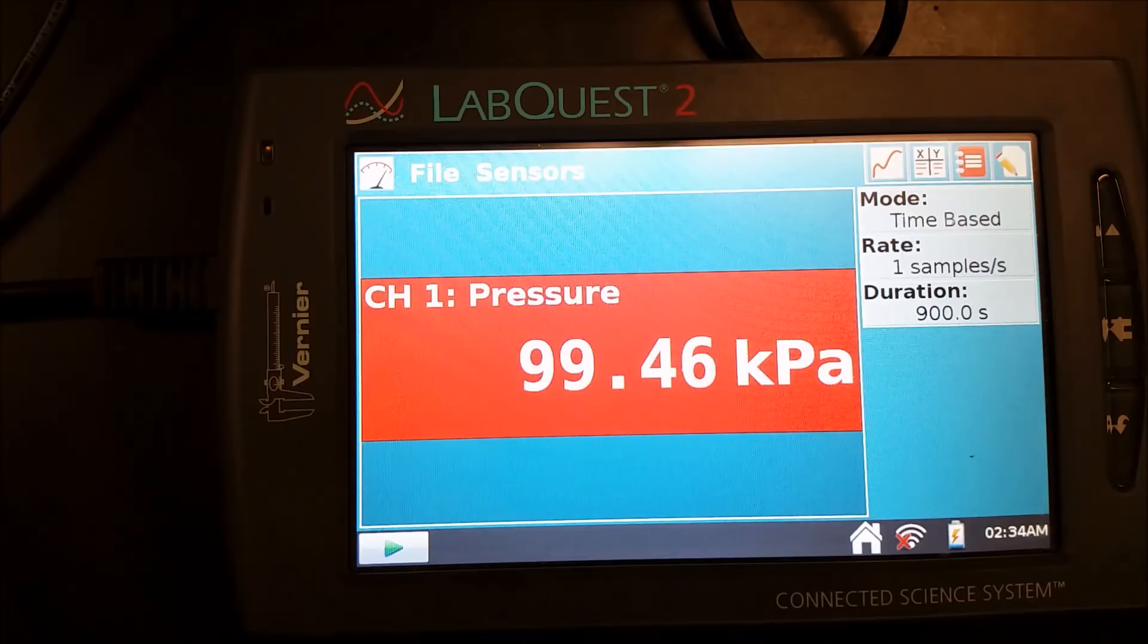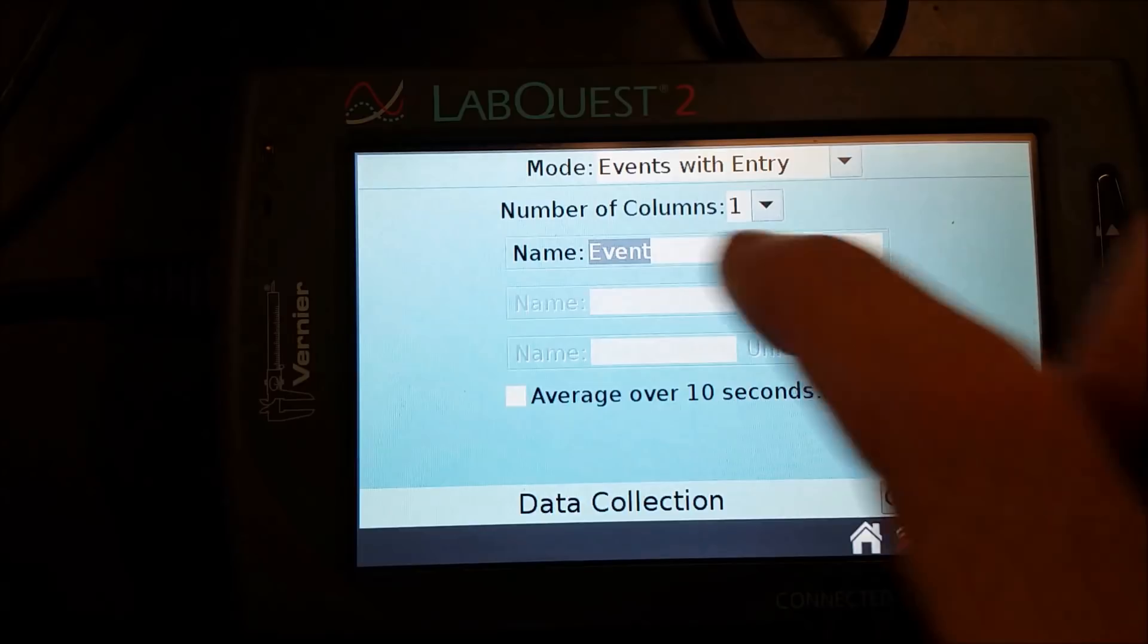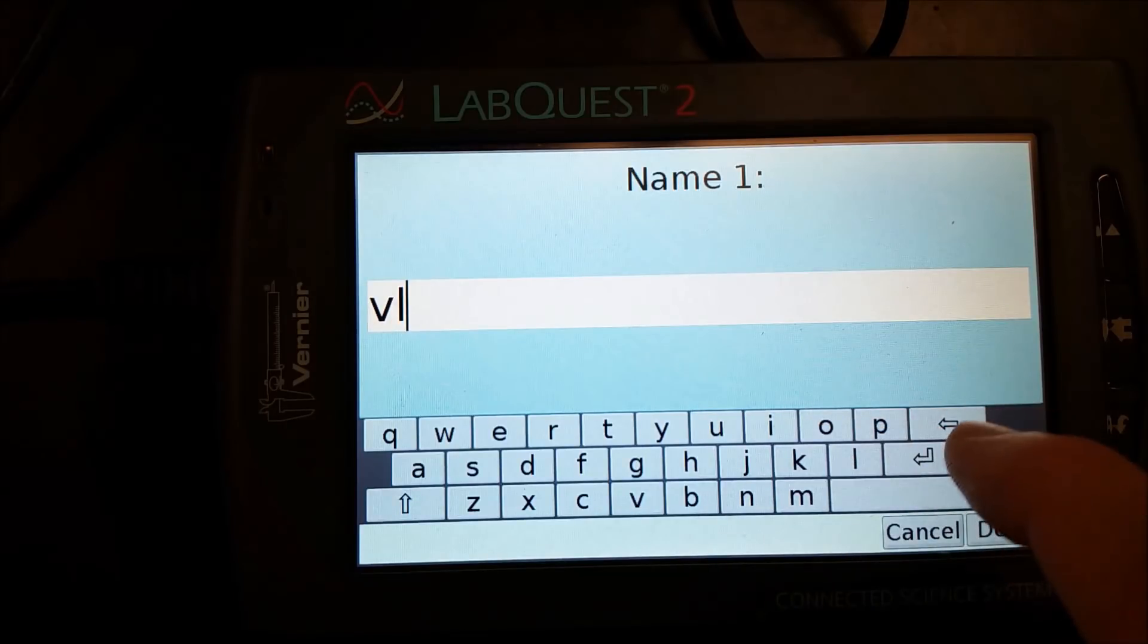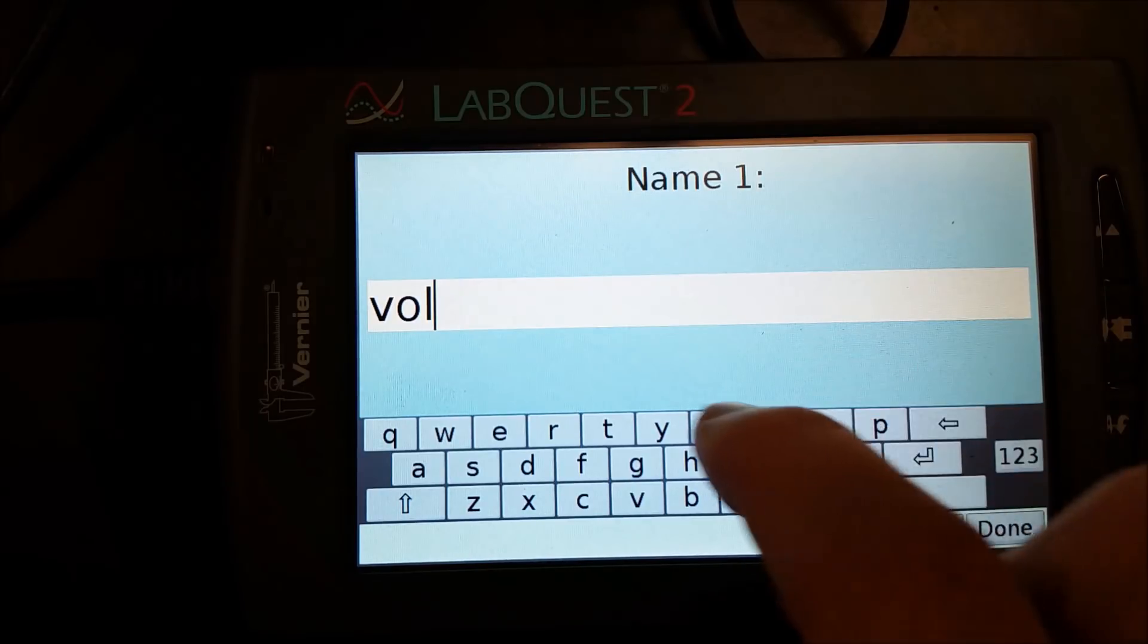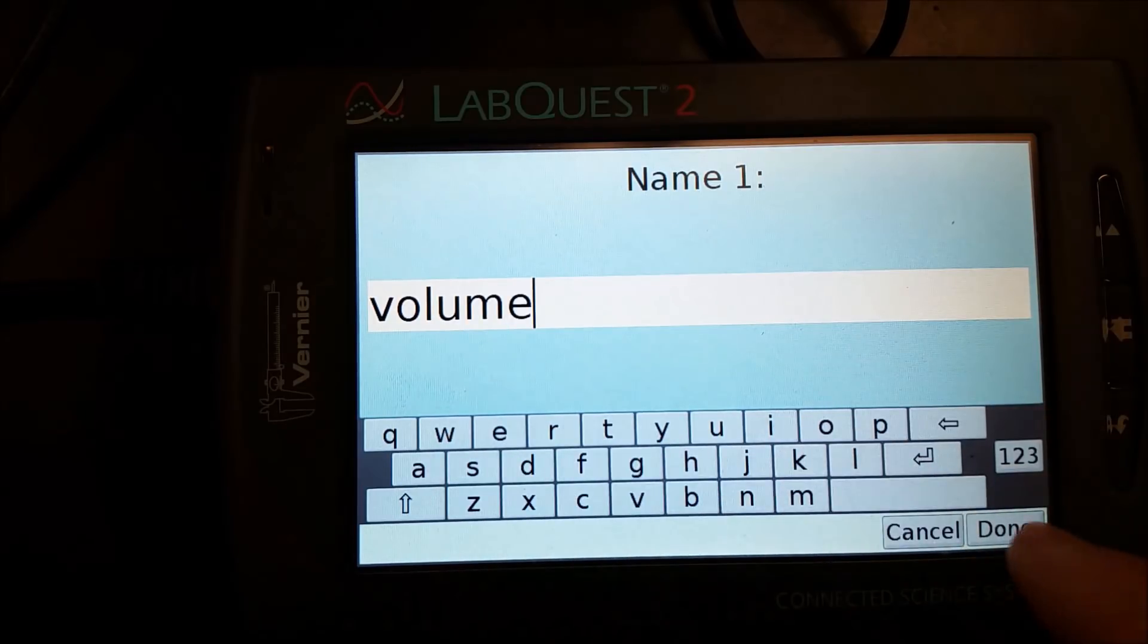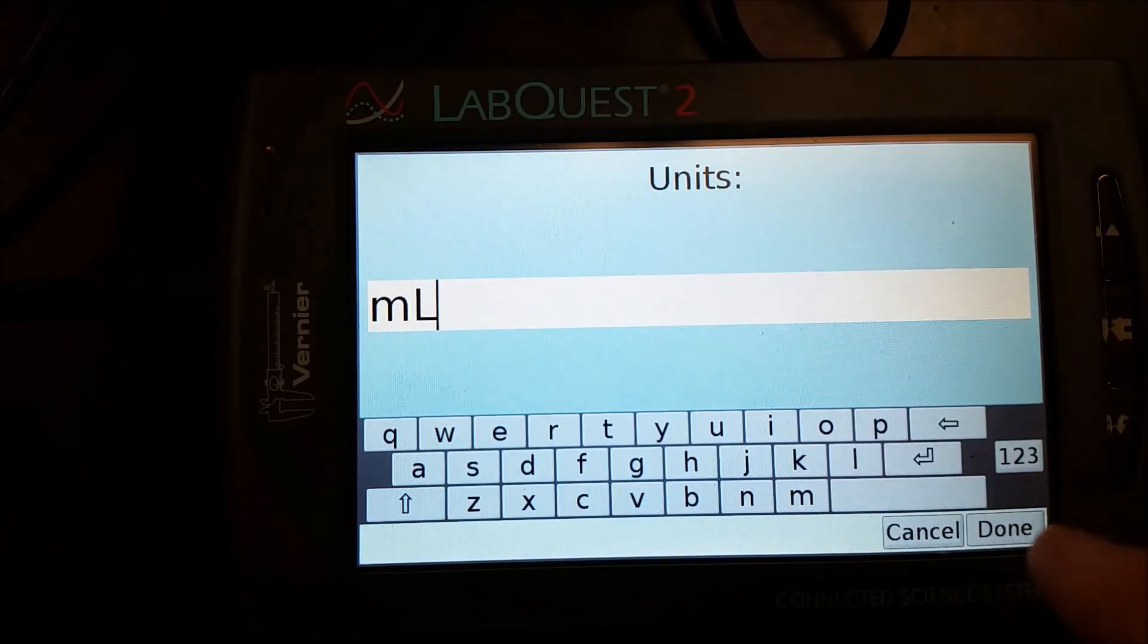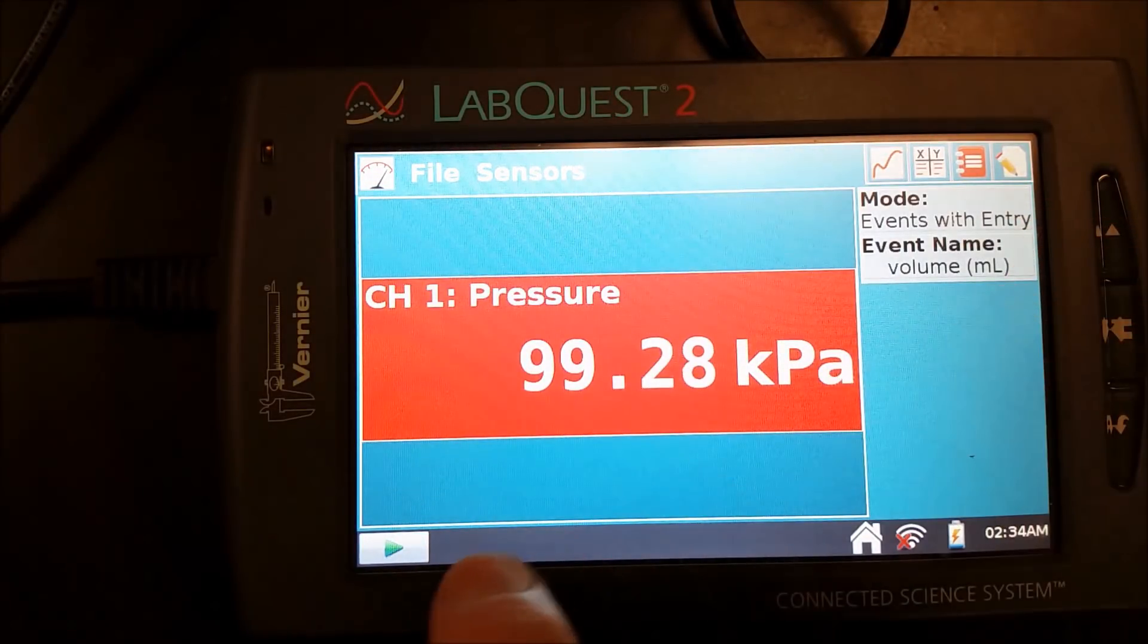So for our third experiment here, the way you're going to set this up again is you're going to go from mode from time-based to events with entry. This time we're going to look at pressure, which the sensor is going to measure, and we're going to manually type in the volume as we change the volume of the gas in the syringe. So volume, and then for units we'll go with milliliters. So events with entry, volume, we're now ready to hit play.